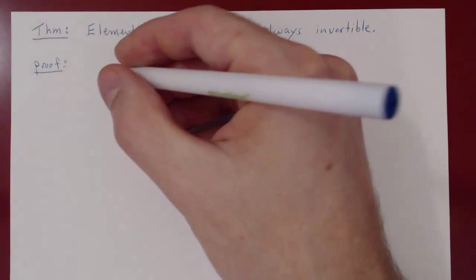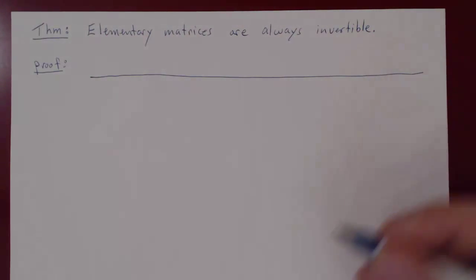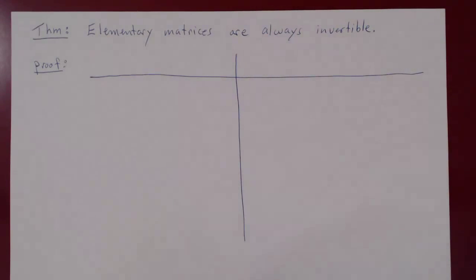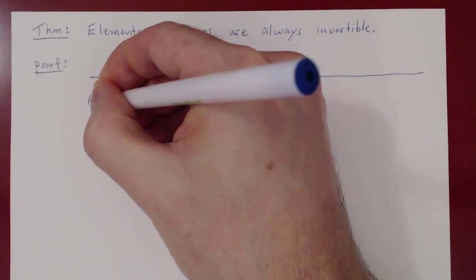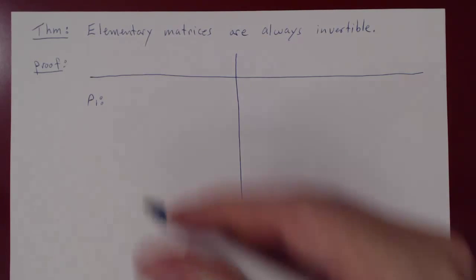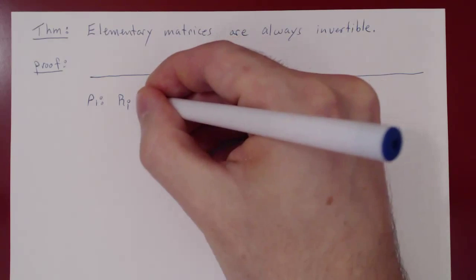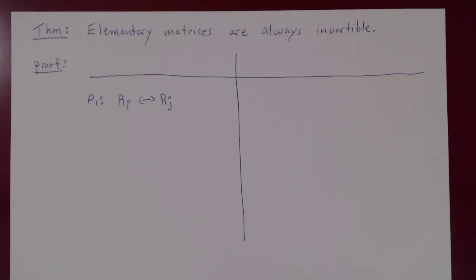So let's consider the three types of row operations and then the corresponding inverses. Let's look at the first type of row operation. The simplest type is the swapping of two rows. Suppose we swap the i-th row of a matrix with the j-th row of a matrix. Now think of this, how would you invert this?